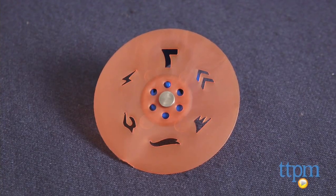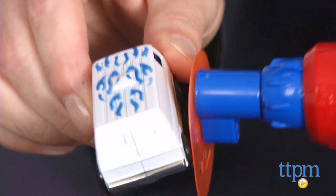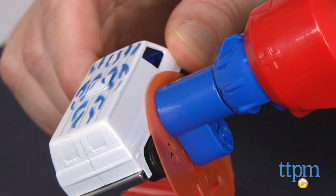You can also use the stencil tool to create one of six different individual patterns. Connect it to the nozzle, and then spray for about ten seconds holding it against the car to transfer the pattern.